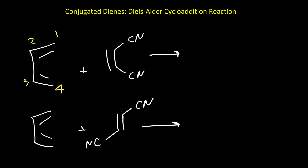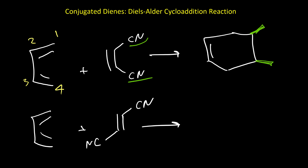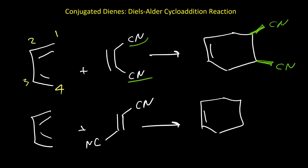When our dienophile has a cis or trans isomer, then we should have the same type of isomer in our product. For example, in the first reaction the cyanide groups on carbons 5 and 6 are cis, so we put these two groups cis together — the product is meso due to molecular symmetry. In the second reaction, the cyanide groups are trans on the dienophile, so in the product they should also be trans on carbons 5 and 6.